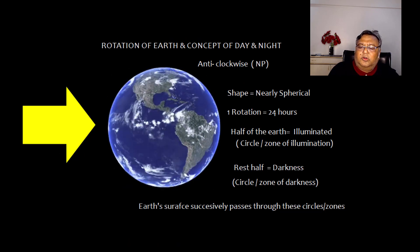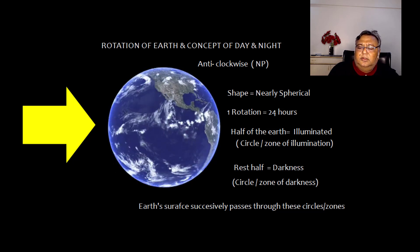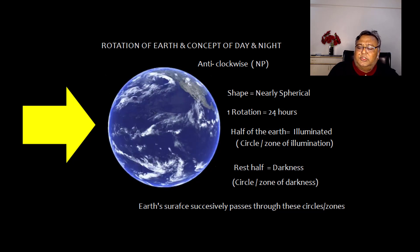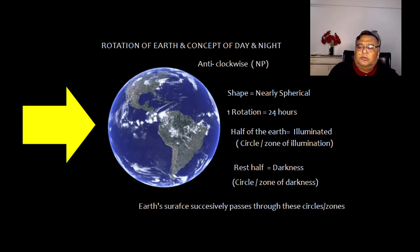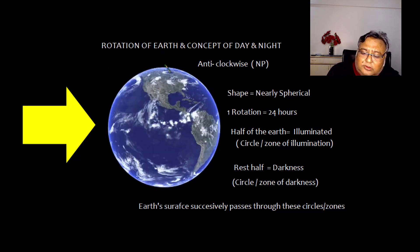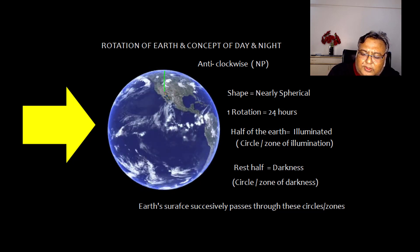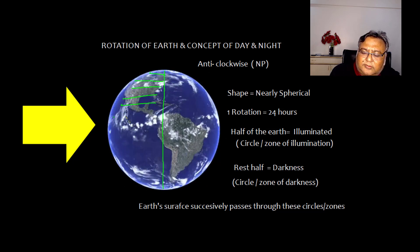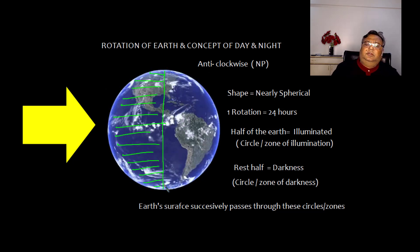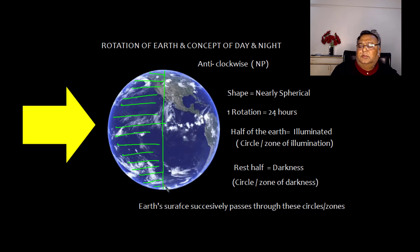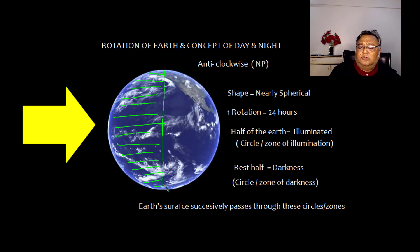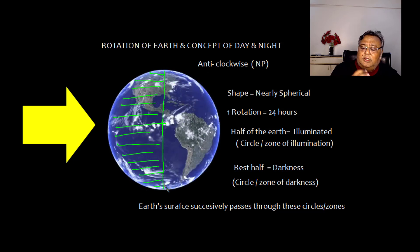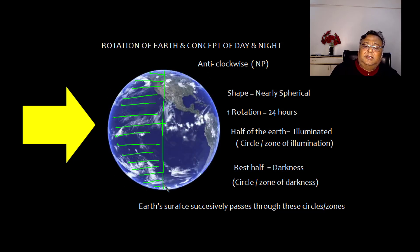Let us talk about rotation of the earth. If you look from the north pole, the rotation of earth is anti-clockwise. The shape of the earth is nearly spherical and it takes about 24 hours for one rotation. The earth has two zones: the circle of illumination (daylight) and the circle of darkness. Every place on the surface of earth keeps passing through these zones, giving day and night.